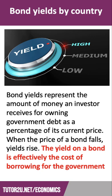Now when the price of a bond goes down, the yield goes up, and that effectively means that it costs the government more money when it needs to go to the capital markets — to the bond markets — to raise fresh debt, sell extra bonds, in the weeks and months ahead. So the yield on a bond is basically the cost of borrowing for the government.